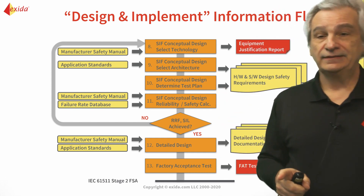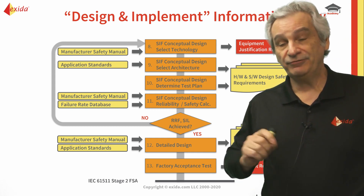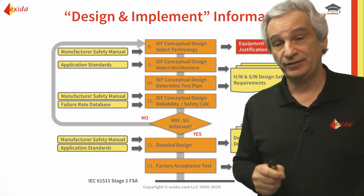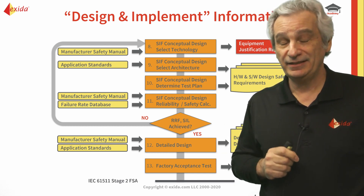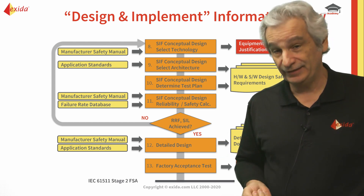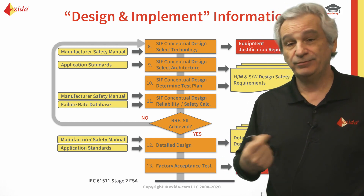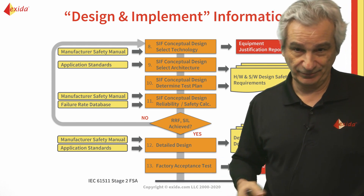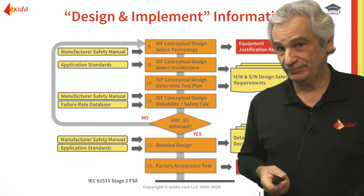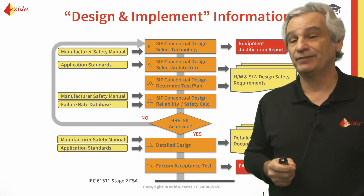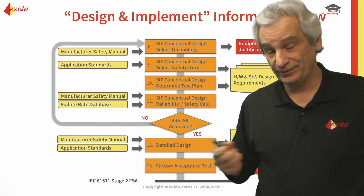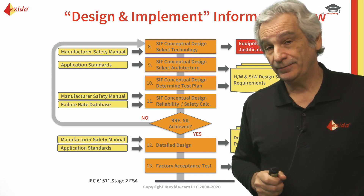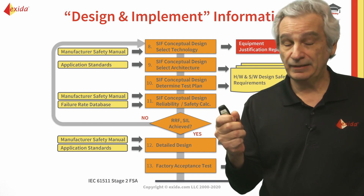Make sure you have the safety manual. IEC 61508 says the manufacturer has to have a safety manual, but it doesn't necessarily mean they have to give it to you for free. Some suppliers may charge for certain sections — for example if it's programmable — but they have to make a safety manual available, even for a prior use justification.